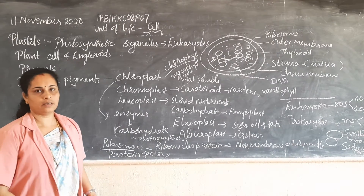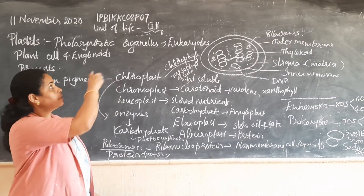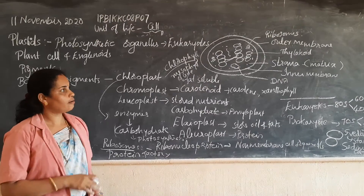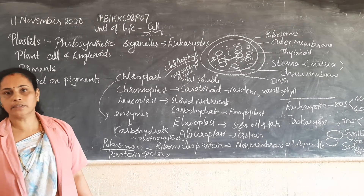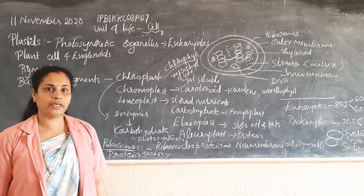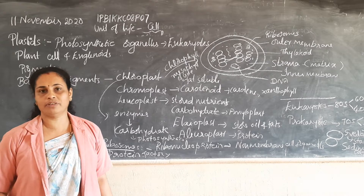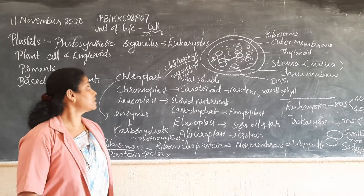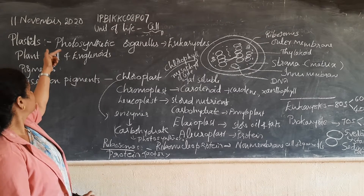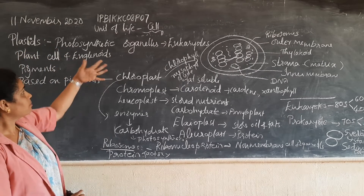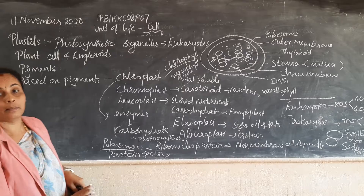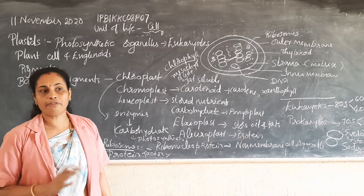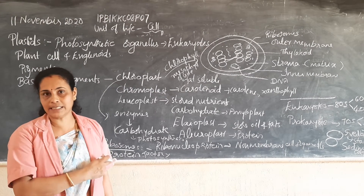Hello students. This is a unit of life - the cell. We have already known about 13 organelles present in our eukaryotic cell. Today let us discuss about some structures, that is plastids - organelles found in the cell.